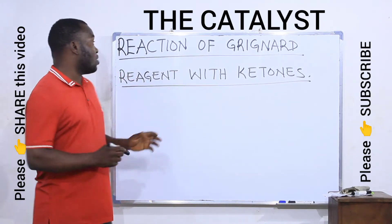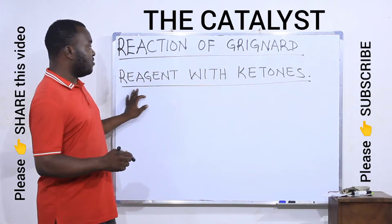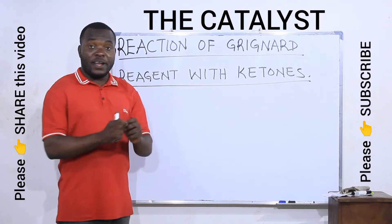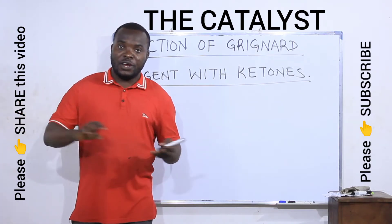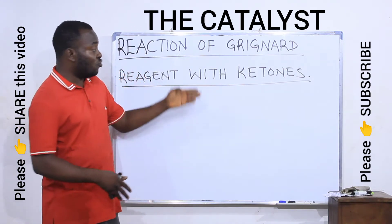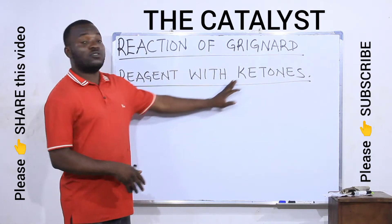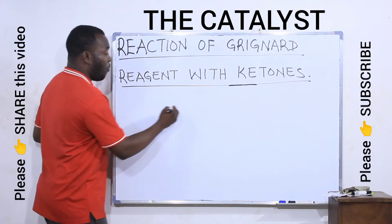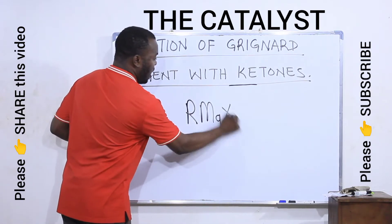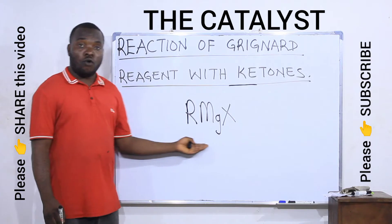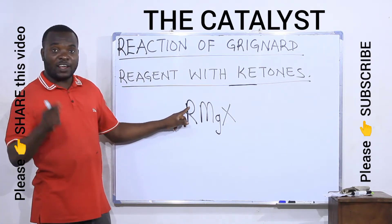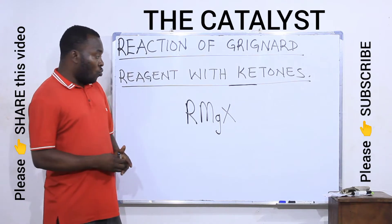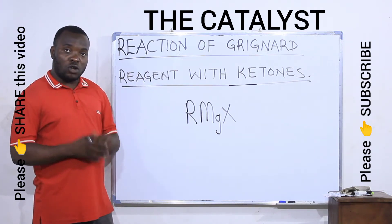In this class we are going to take a look at the reaction of Grignard reagents with ketones. In the previous video we learnt the reaction between Grignard reagents and aldehydes. A Grignard reagent is made up of an alkyl group, magnesium metal, and a halogen. This is the general formula for Grignard reagents, where R represents an alkyl group, Mg stands for magnesium, and X stands for a halogen.